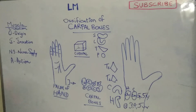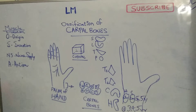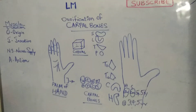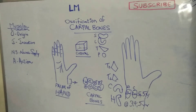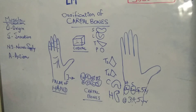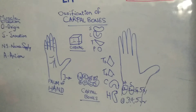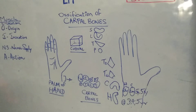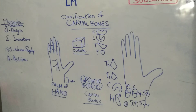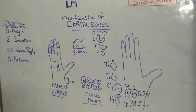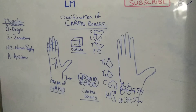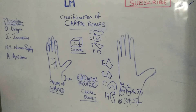These seven carpal bones remain from the fifth birthday through the eleventh birthday. At the time of puberty, nature gives one final gift — pisiform. So from puberty onwards, all eight carpal bones are present in the wrist area, including the pisiform.